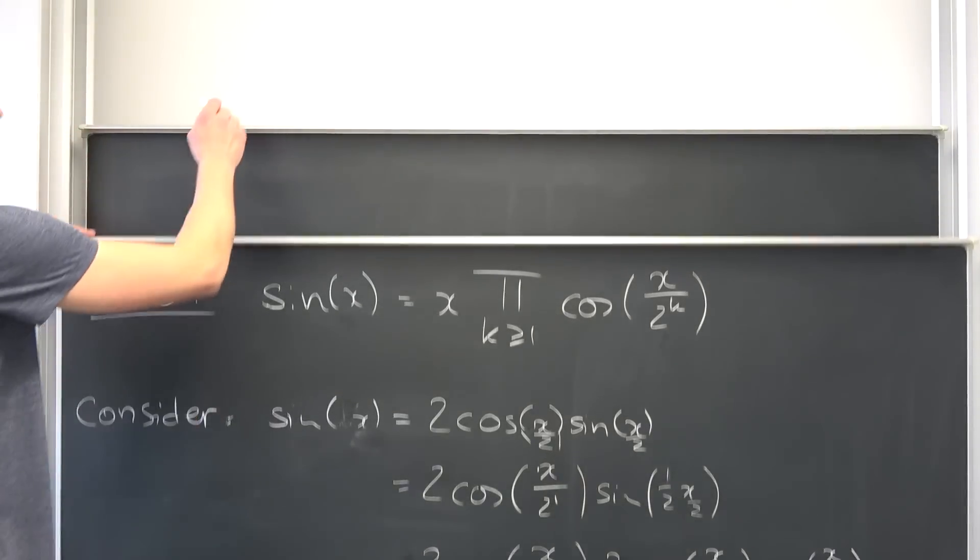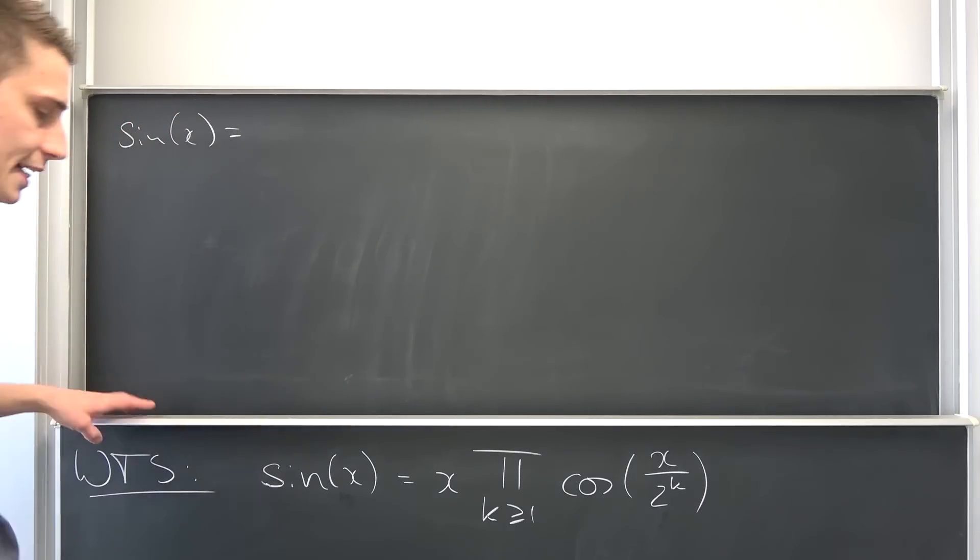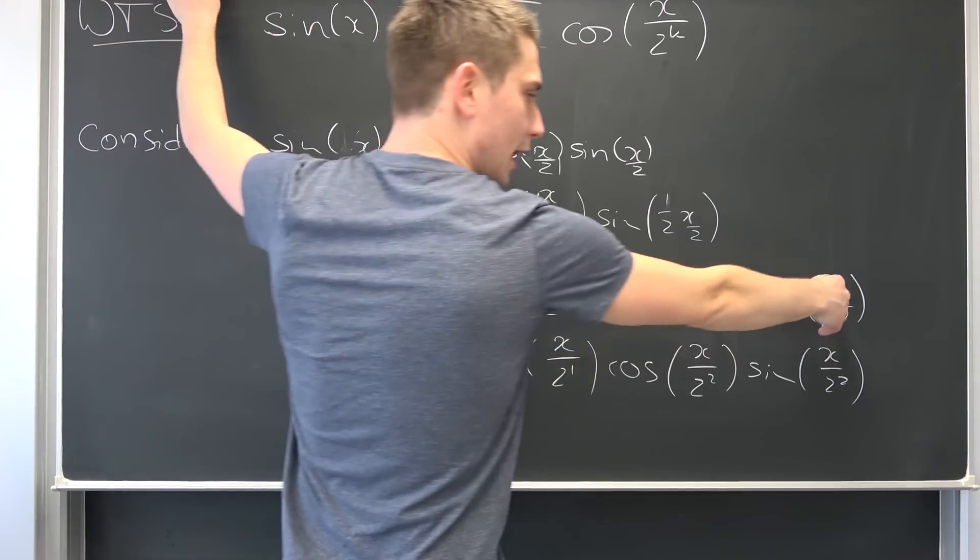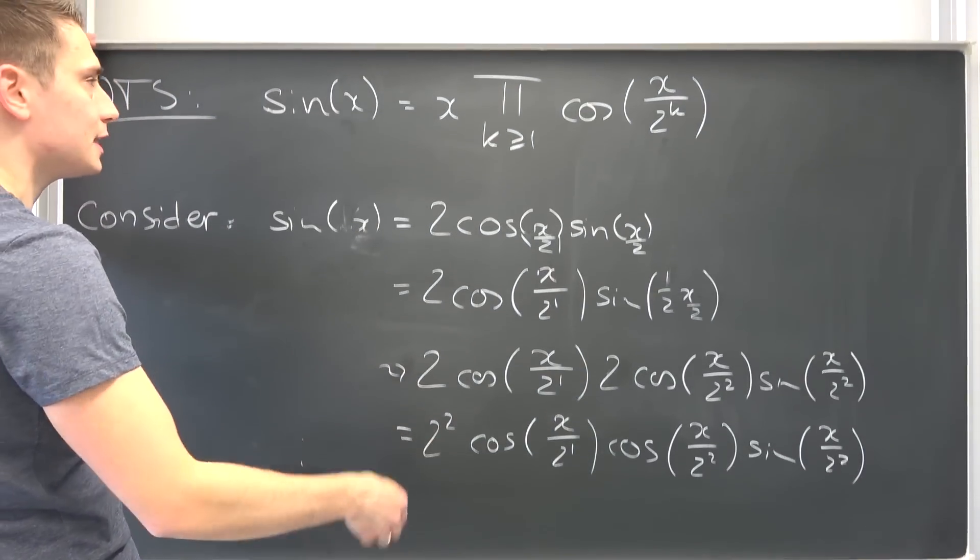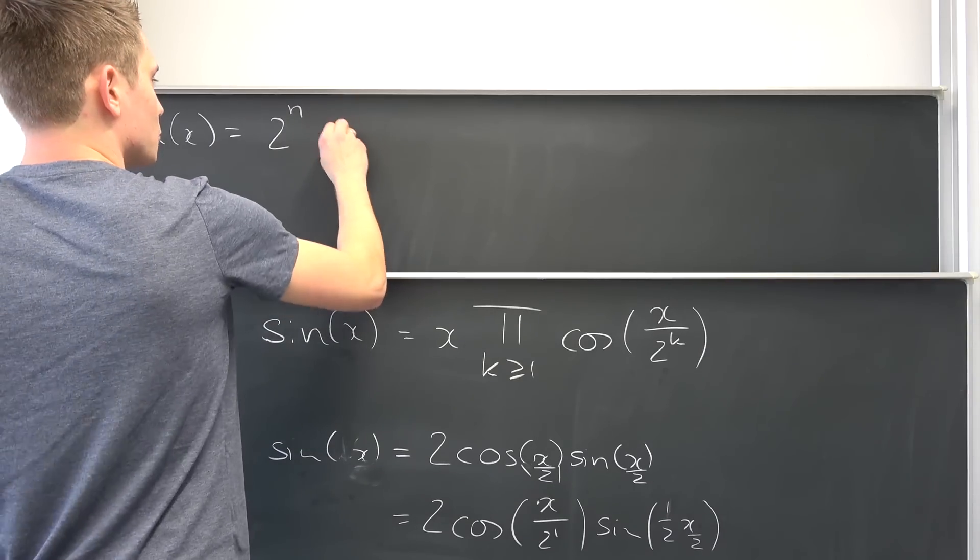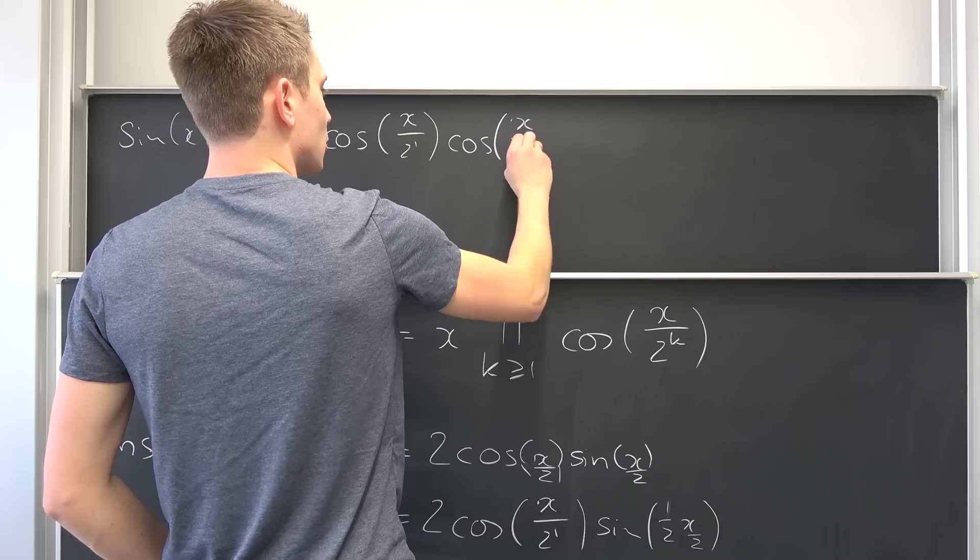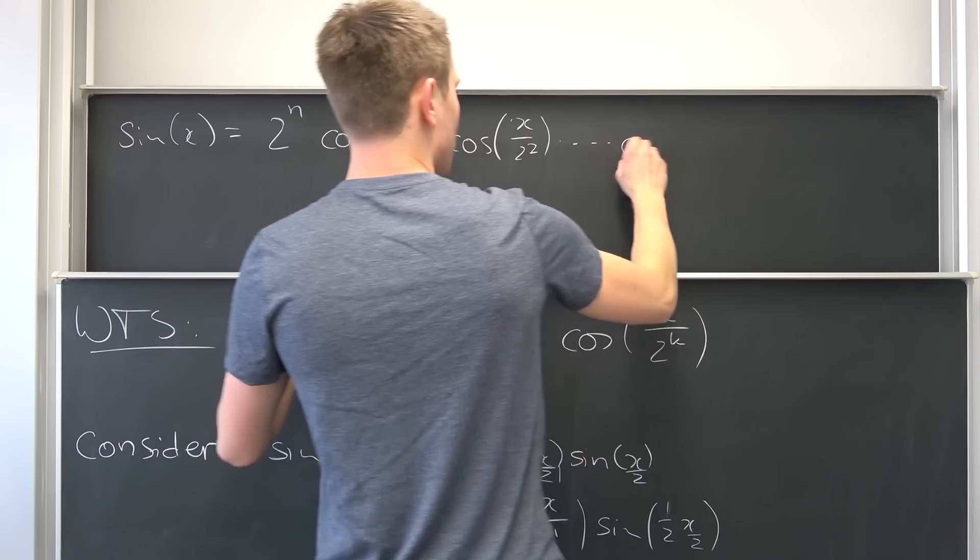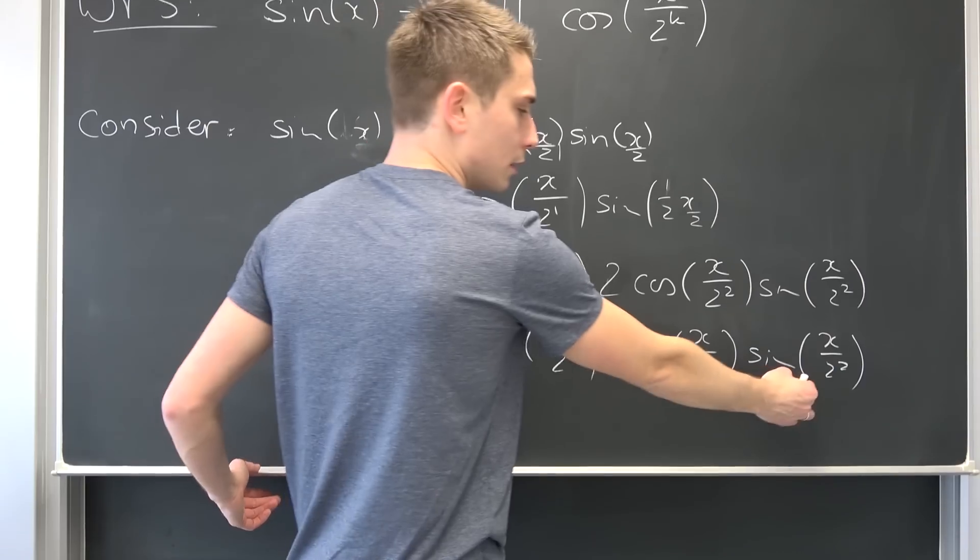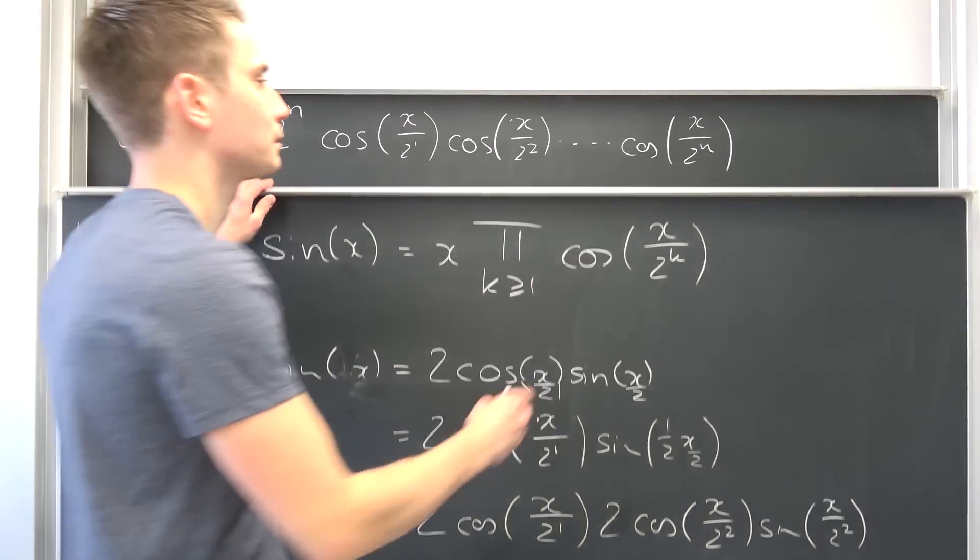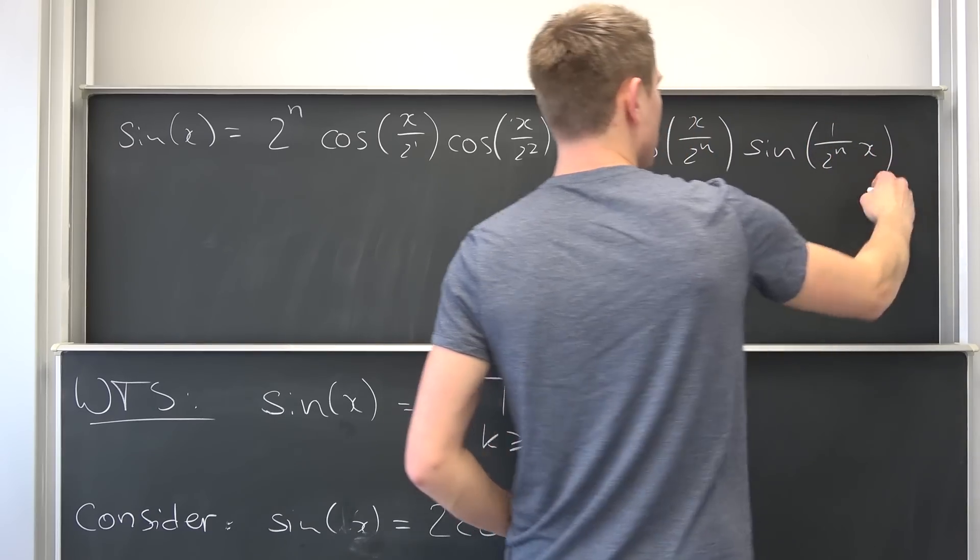Overall we are going to end up with the sine of X after iterating this half angling n times. On the second iteration we had 2 squared, meaning this is going to give us 2 to the nth power. Then we are going to have the cosine of X over 2 to the first power times the cosine of X over 2 squared, times up until the cosine of X over 2 to the nth power, times the sine of X over 2 to the nth power. Of one over 2 to the nth power times X, I'm going to put it like this.